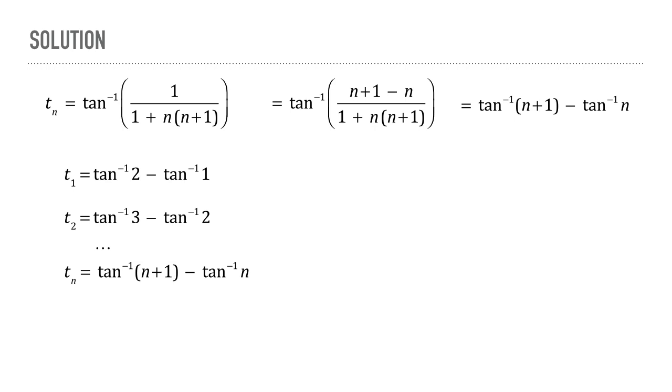So when we add all these terms, we find that all the terms cancel out except for tan inverse of n+1 and tan inverse of 1. Therefore the sum is equal to tan inverse of n+1 minus tan inverse of 1. So the correct answer is option D.